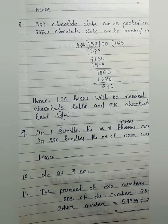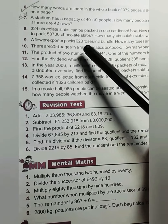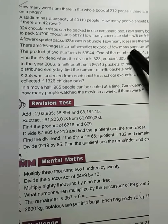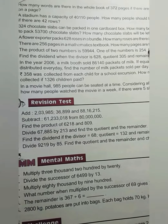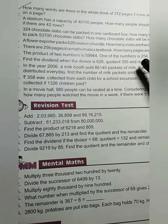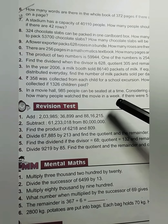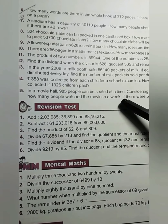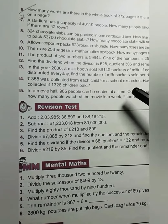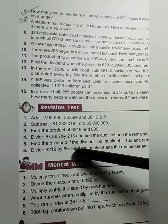9th number: A flower exporter packs 628 roses in a bundle. How many roses are there in 536 such bundles? You write: in one bundle, the number of roses are 628. Then in 536 bundles, the number of roses — you multiply these two numbers. Then you get your answer.